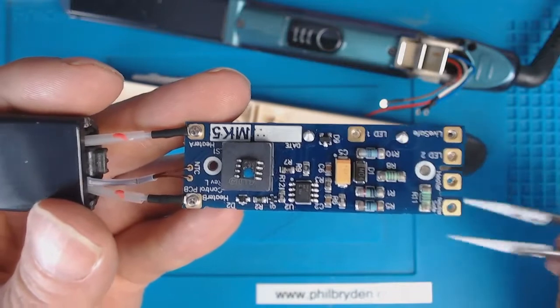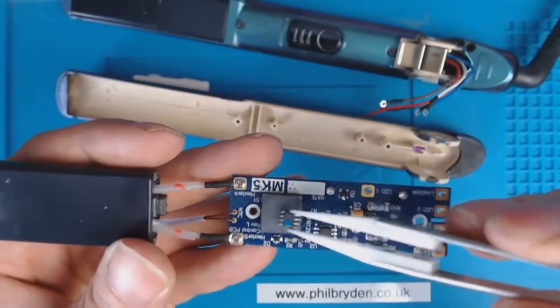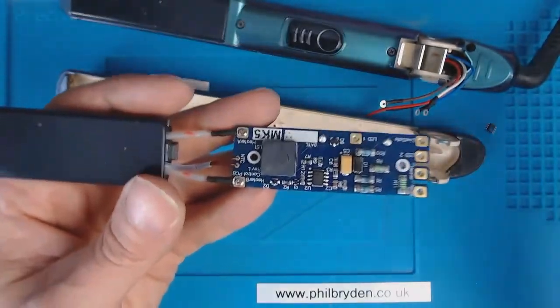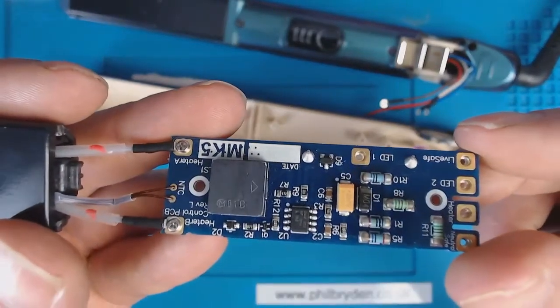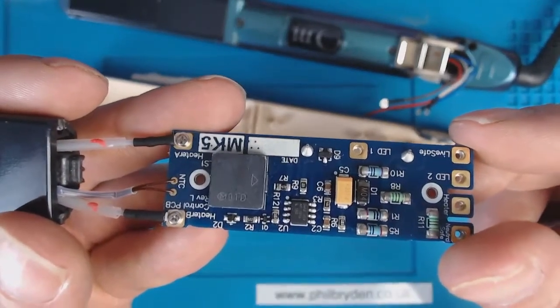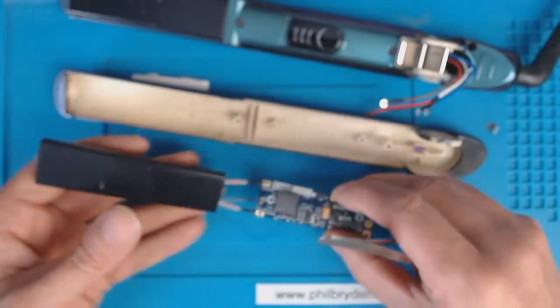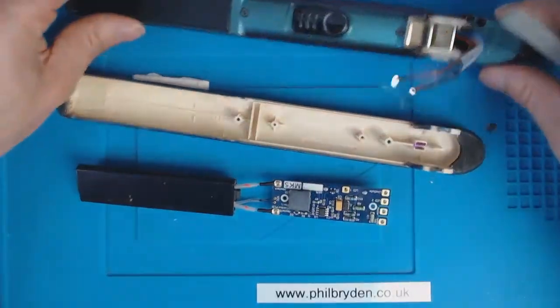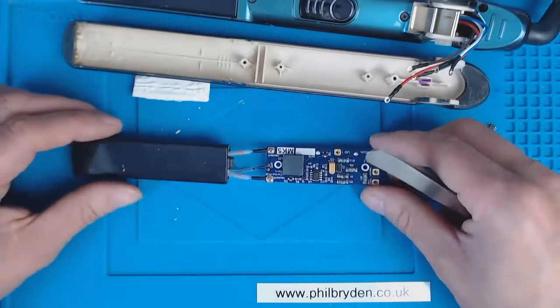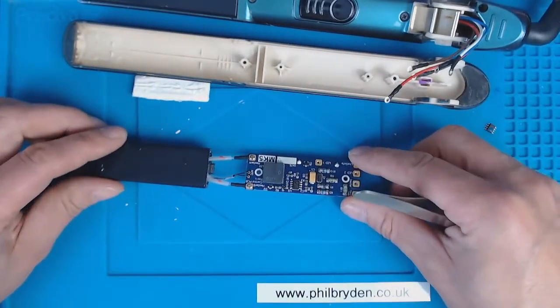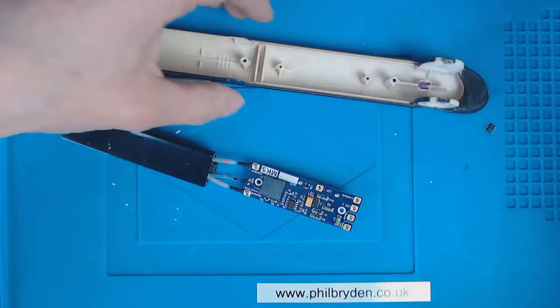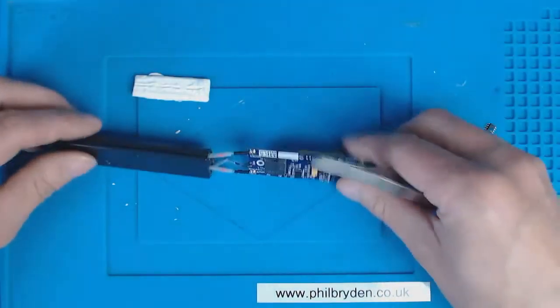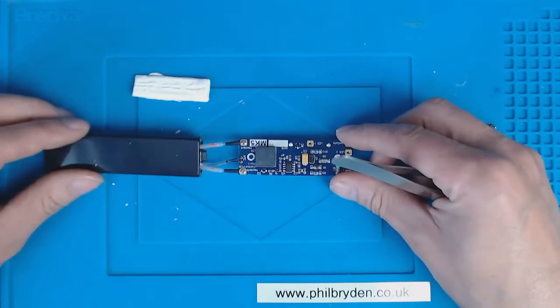There's some small capacitors and resistors around there which I'm hoping the hot air station won't blow off the board. We'll tape that down with some Kapton tape to stop it from moving, and we'll get some hot air on there and see if we can take this off.